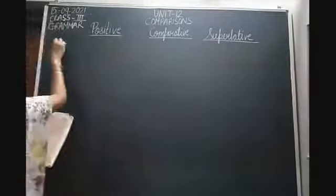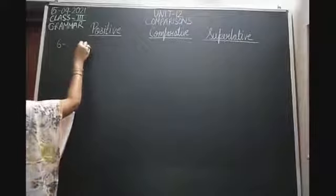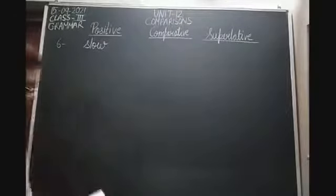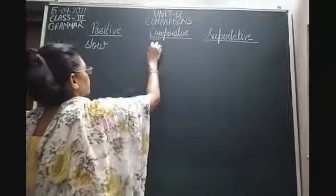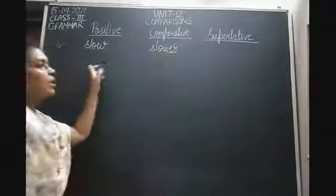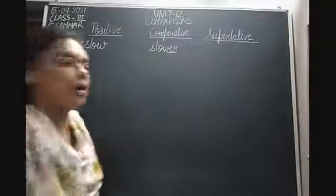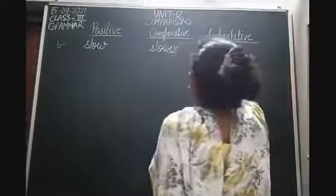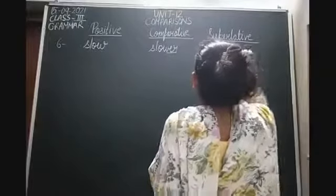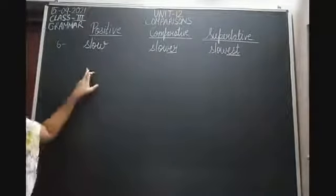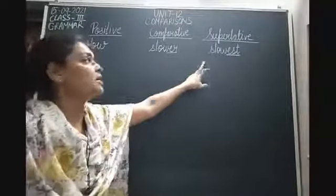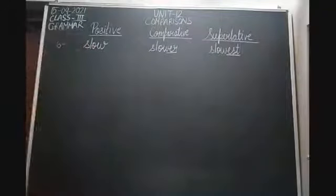Now let's start with the sixth one. The sixth positive degree is slow. How will we make the comparative degree? We simply add ER at the end, so slow becomes slower. Then for the superlative degree, we simply add EST at the end. So the positive degree is slow, the comparative degree is slower, and the superlative degree is slowest.